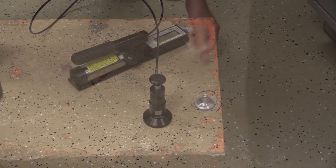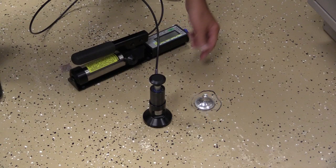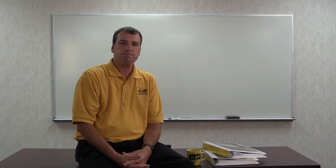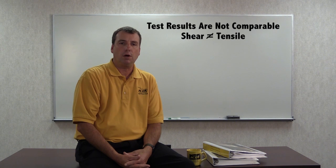As discussed, the test methods are used to evaluate two different adhesion properties. The tape and knife adhesion tests are used to evaluate the shear or peel strength of a coating, while the pull-off test is used to evaluate a coating's tensile strength or its resistance to a perpendicular pull. Since the testing mechanisms are different — peel back versus pull-off — the test results generated from each test are not comparable.